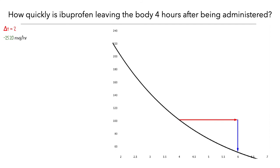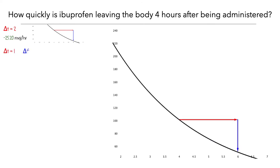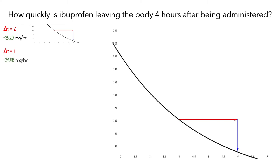Let's zoom in a bit to see this better. We'll keep this image on the screen to compare with some other approximations. Now let's look at what would happen if we used a smaller delta t. Here, delta t is equal to 1. We can compute the average rate of change over this interval by dividing the change in f by the change in t. So when delta t is 1 hour, the average rate is –29.48 mg per hour.